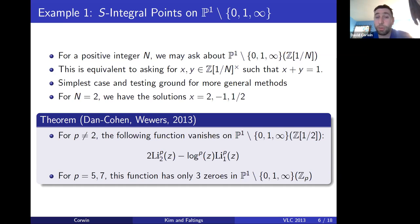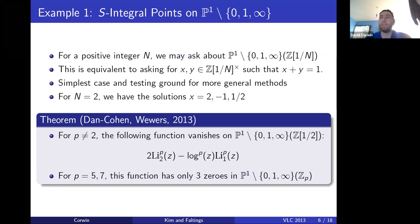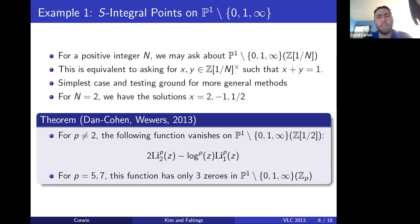For a simple example with N = 2, there are three solutions corresponding to x = 2, −1, and 1/2, with y = 1 − x. Kim, Balakrishnan, and Dogra back in 2013 found a function written in terms of p-adic polylogarithms that vanishes on the set of integral points as long as p is not 2. It was verified using the Newton polygon method that for p = 5 or 7, this function has only those three zeros.